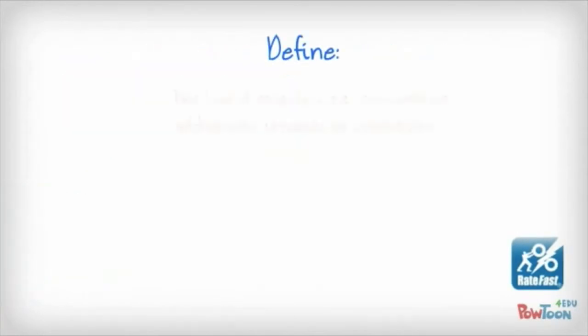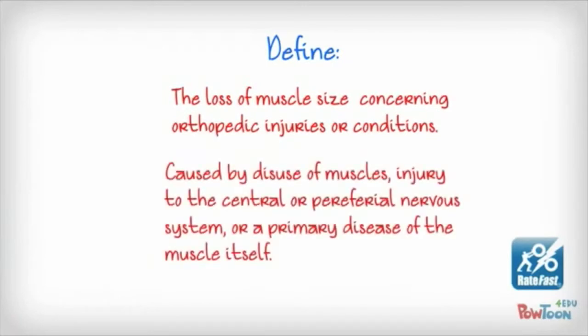Some quick definitions here about atrophy. The definition of atrophy is the loss of muscle size, concerning orthopedic injuries or conditions, primarily for our discussion here. Of note, it's interesting that nowhere in the AMA guides does it actually define atrophy for us. Other medical definitions and terms are defined in there, but curiously the AMA guides do not give us a specific definition for muscle atrophy. So for the use of our discussion here, it simply means the loss of muscle size or a thinning of a muscle.